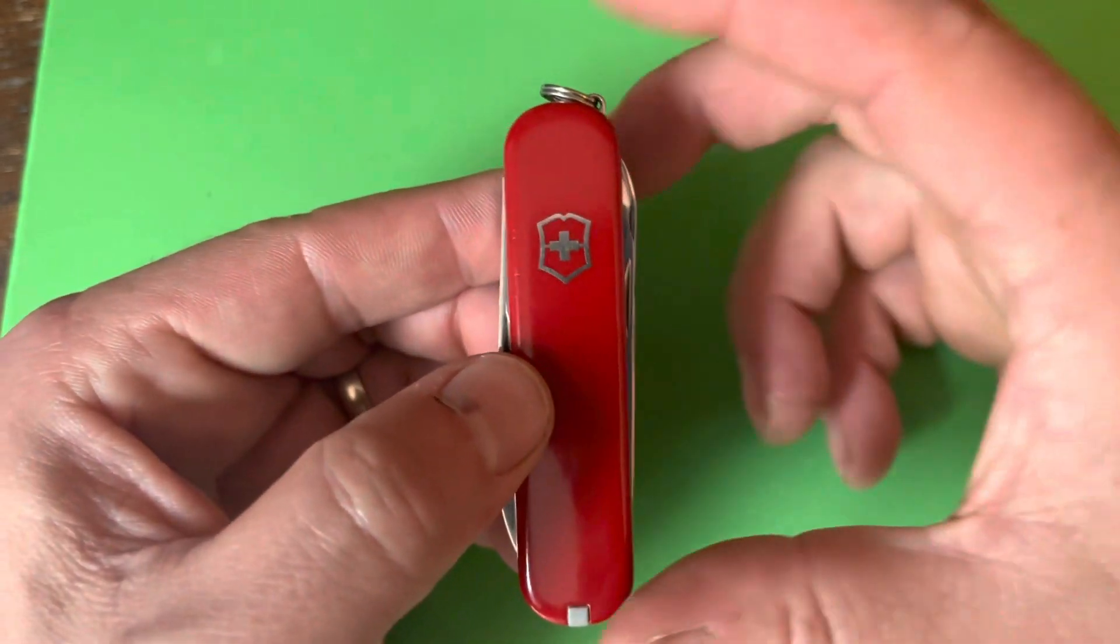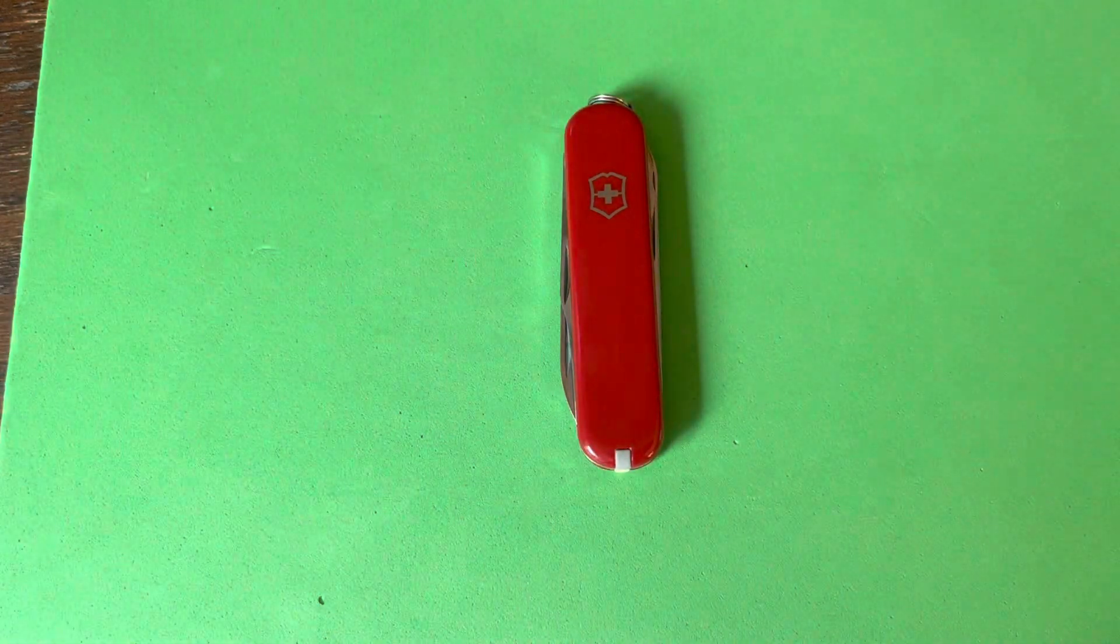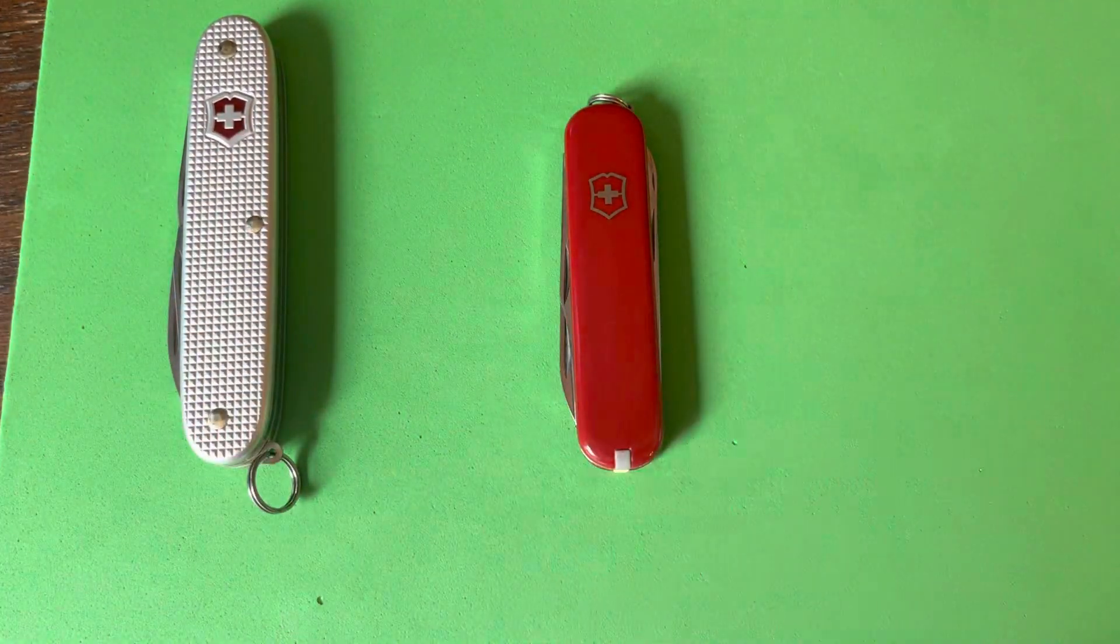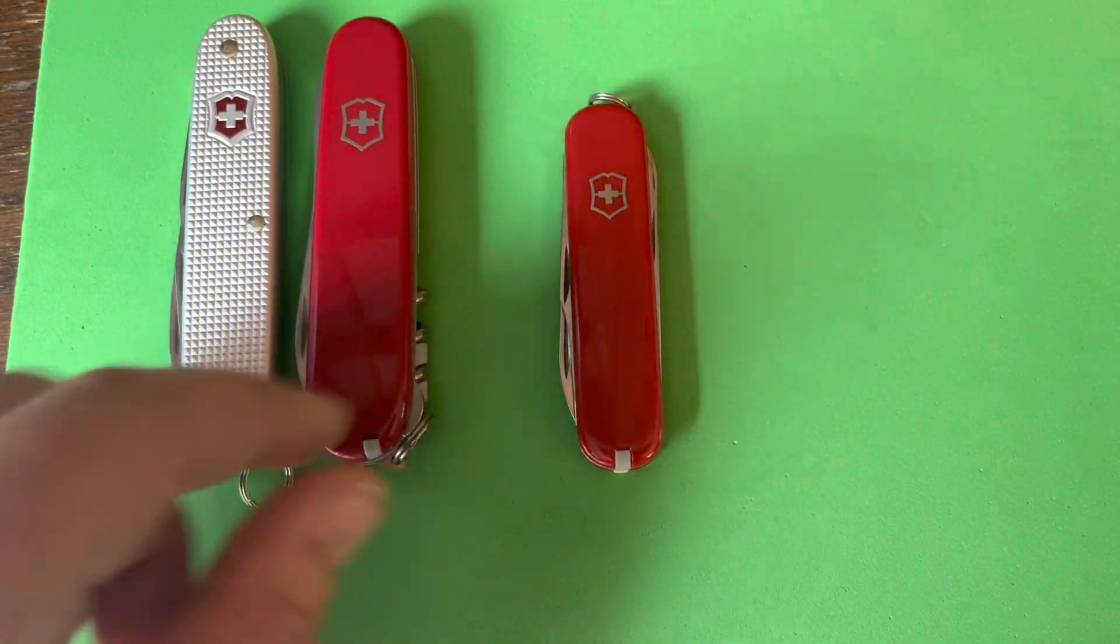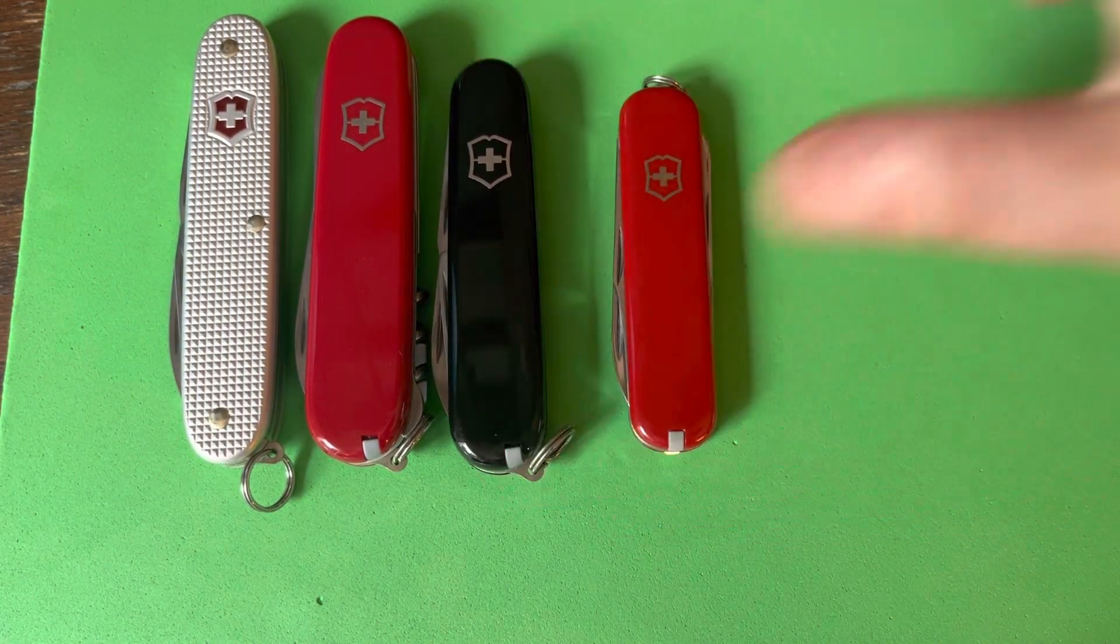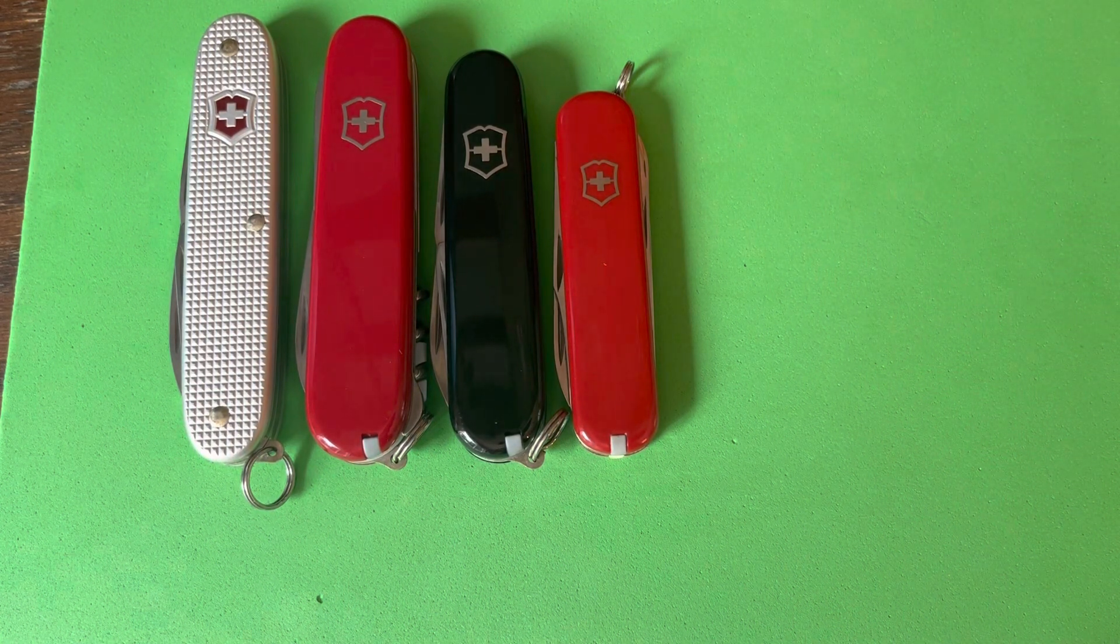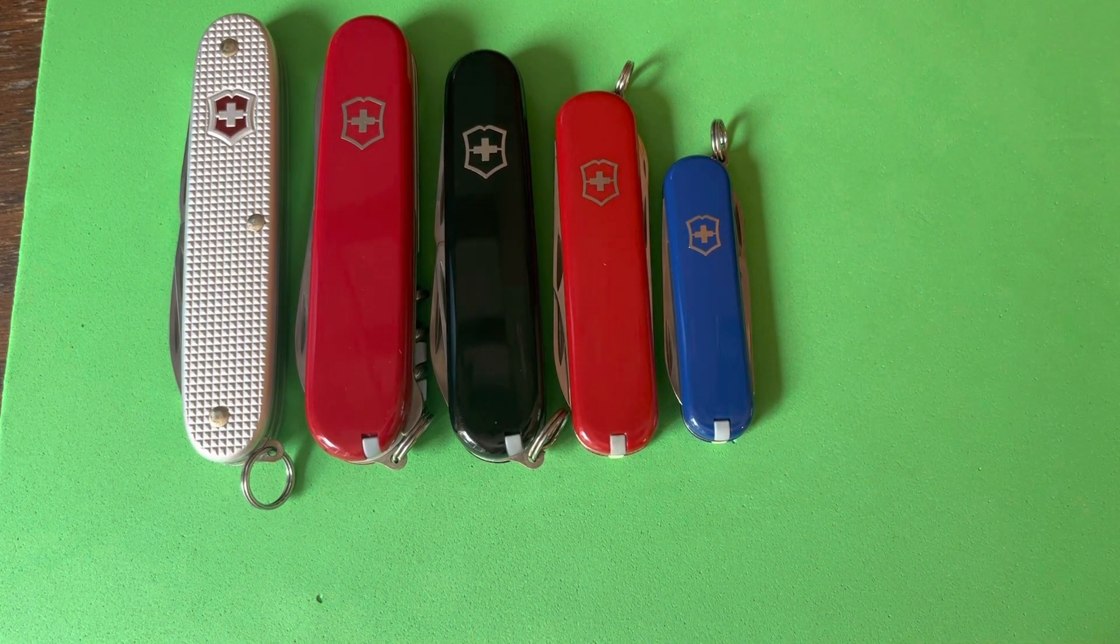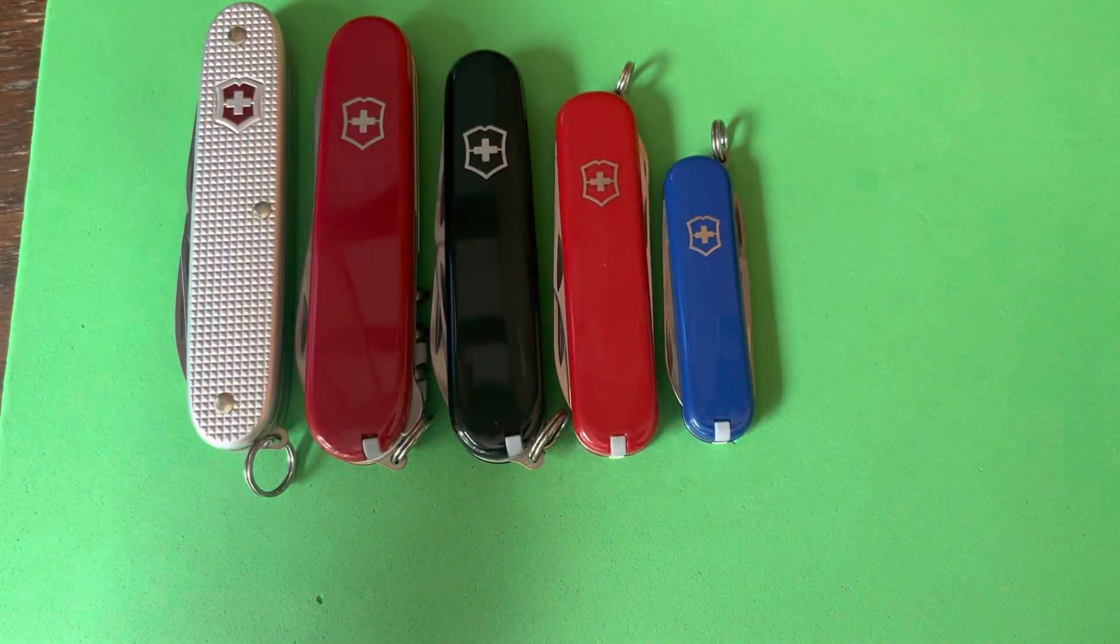Let me show you what a 74 millimeter knife is like in size compared to some of their other sizes available. Here is a 93 millimeter Victorinox. Here is a 91 - this is a Pioneer, this is a Compact. Then here is a Recruit in the 84 millimeter size, then would come the 74 millimeter size, and then of course you have your 58 millimeter Classic SD here.